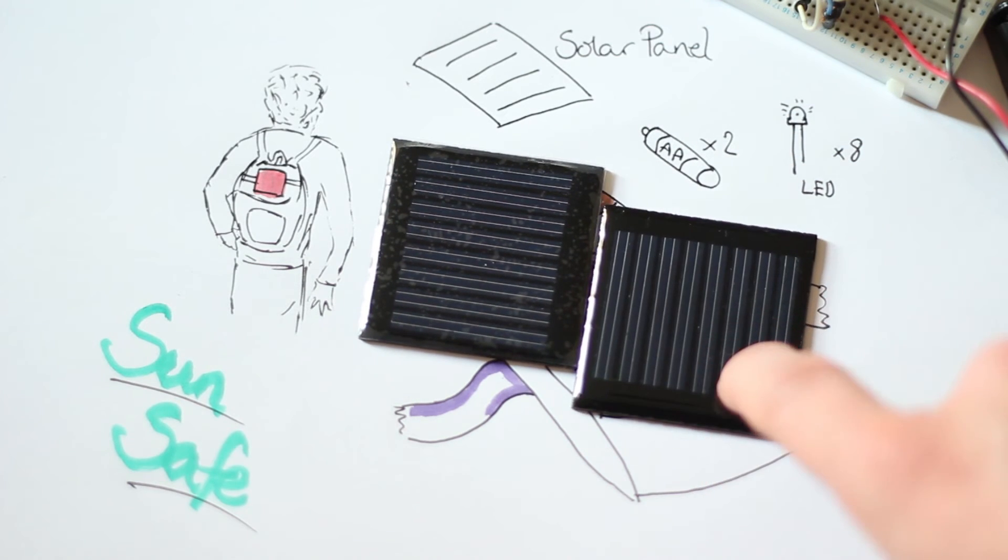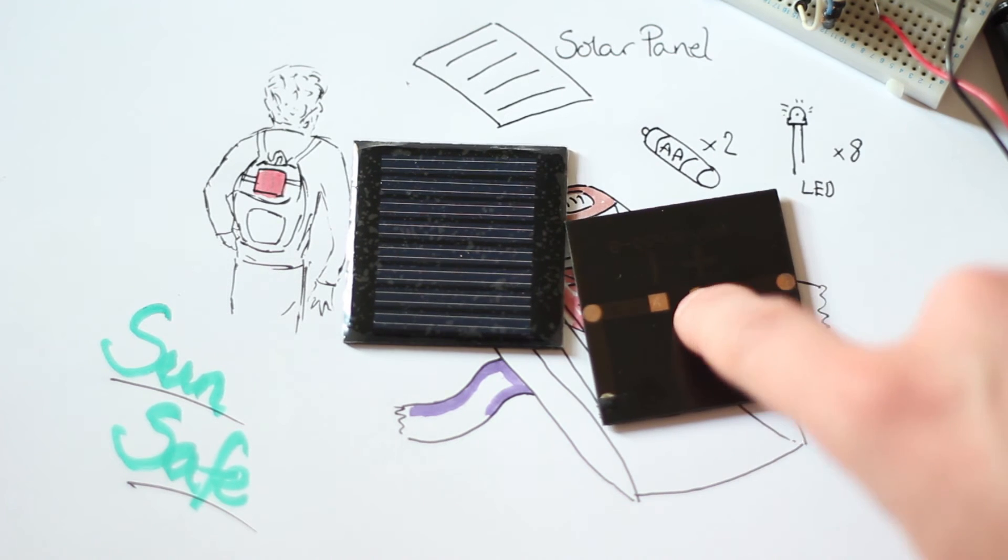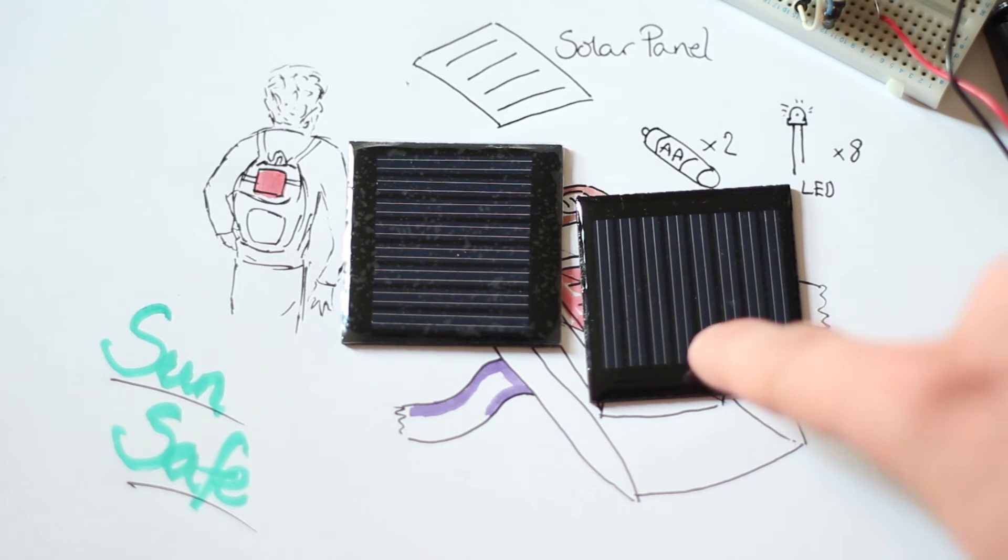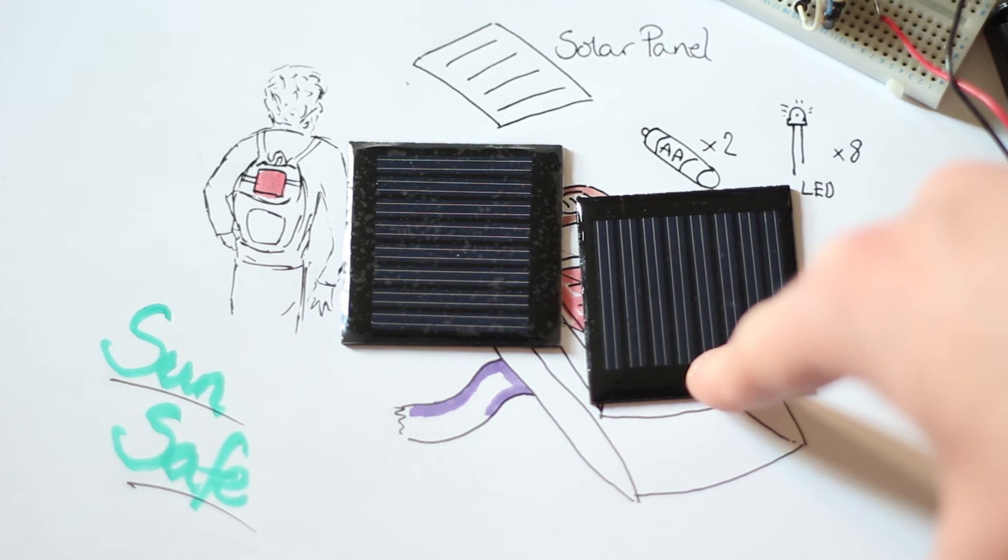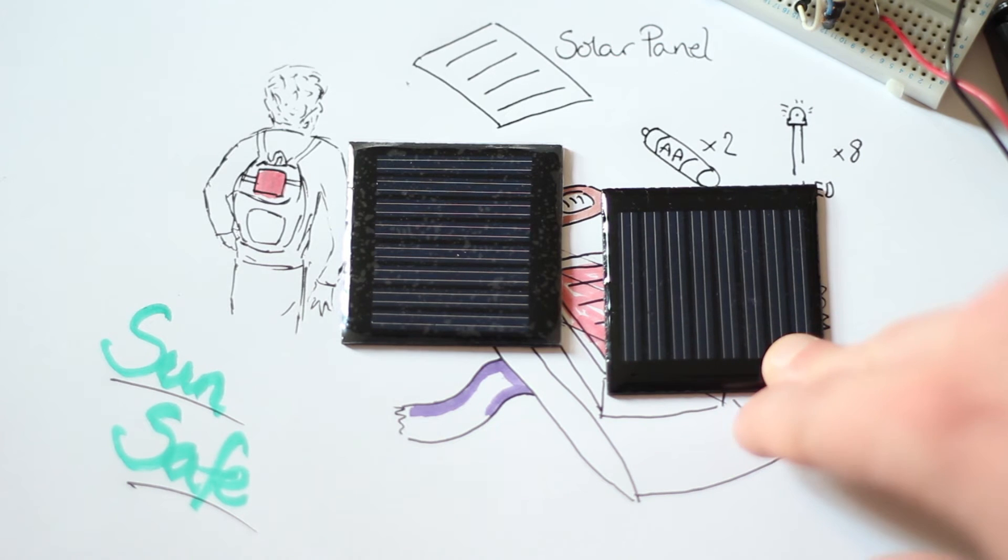These are the same kind you'd find in any outdoor garden light. These ones aren't soldered together, but they'll kick out around 4 volts in good sunlight and about 3.5 to 4 in moderate sunlight.